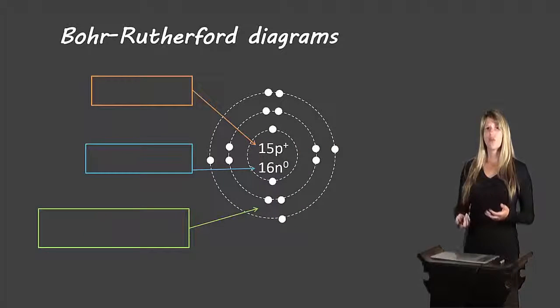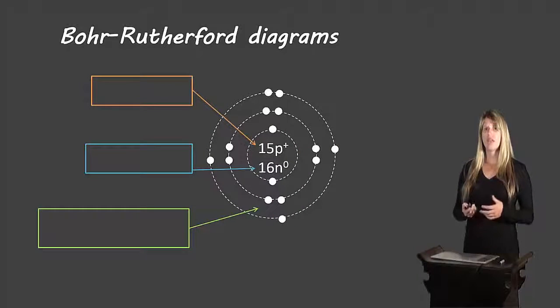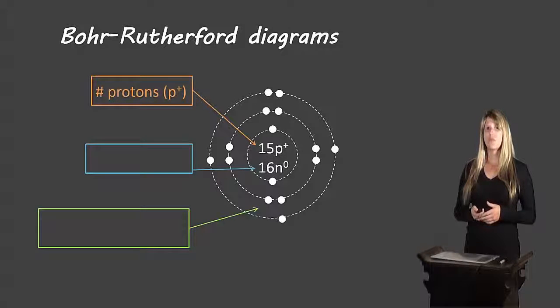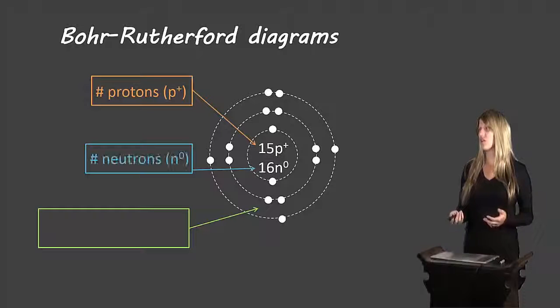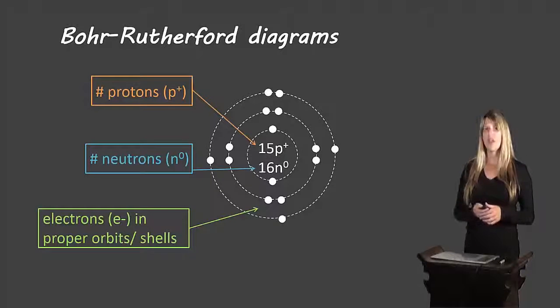So let's look at our Bohr-Rutherford diagrams. This is an example of a Bohr-Rutherford diagram. Let's look at the different parts. On the inside, we write the number of protons. So in this case, there are 15 protons. And we use the symbol p+ to indicate that 15 represents protons. We write the number of neutrons. Here there are 16. And we use the symbol n0 to indicate the neutrons. And then surrounding that nucleus and shells outside the nucleus, we write our electrons.